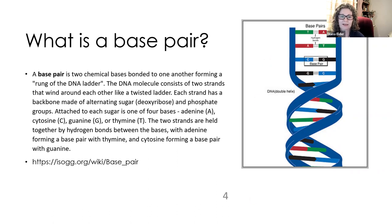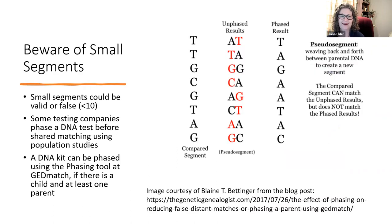What does this mean to us as genealogists? Small segments could be valid or false. We want to watch for anything below 10 centimorgans, because this is where the problem can come into play.